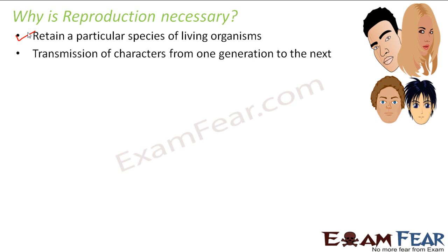Transmission of characters from one generation to the next is another role of reproduction. We notice similarities between ourselves and our parents. Characters or traits get transferred from one generation to the other. Our father may look very similar to our grandparents, and our grandfather looks very similar to his parents — maybe similarities with the father, the mother, or a mix of both.